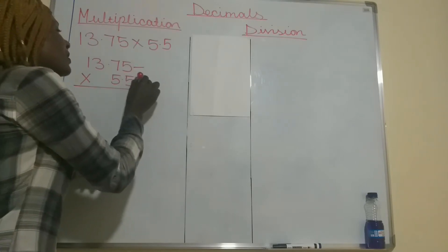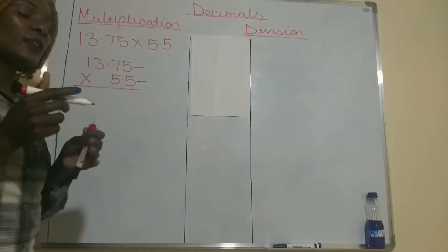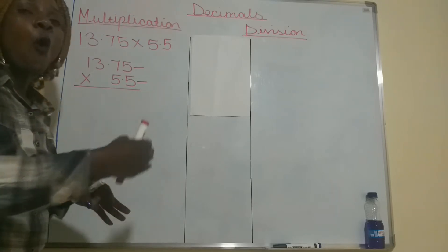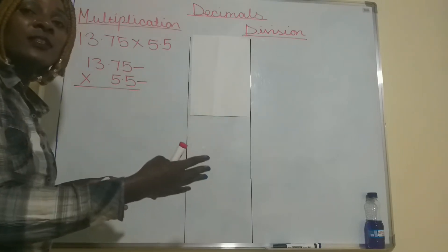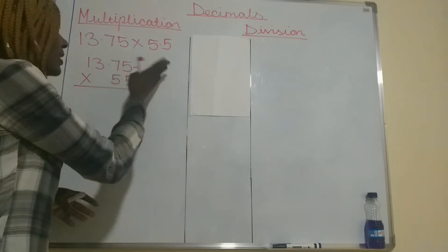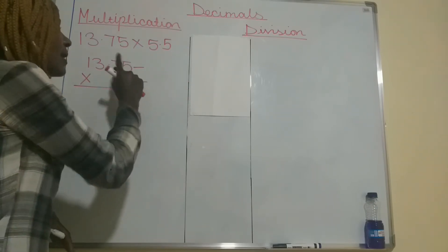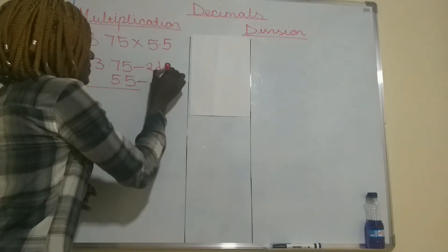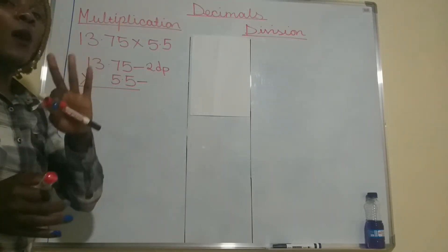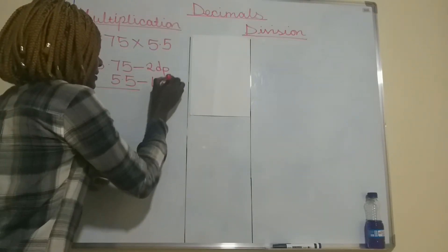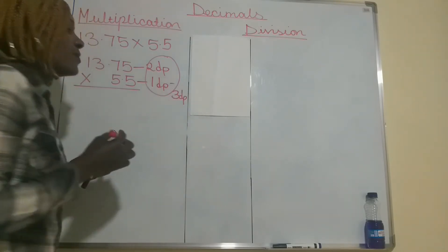When you look at this number — as I talked about in my previous video — decimal places are the number of digits that are after the decimal point on your right. This number has two numbers after the decimal point, meaning it has two decimal places (2dp). This number on the right has only one number after the decimal point, so it has one decimal place. All together, you have three decimal places.